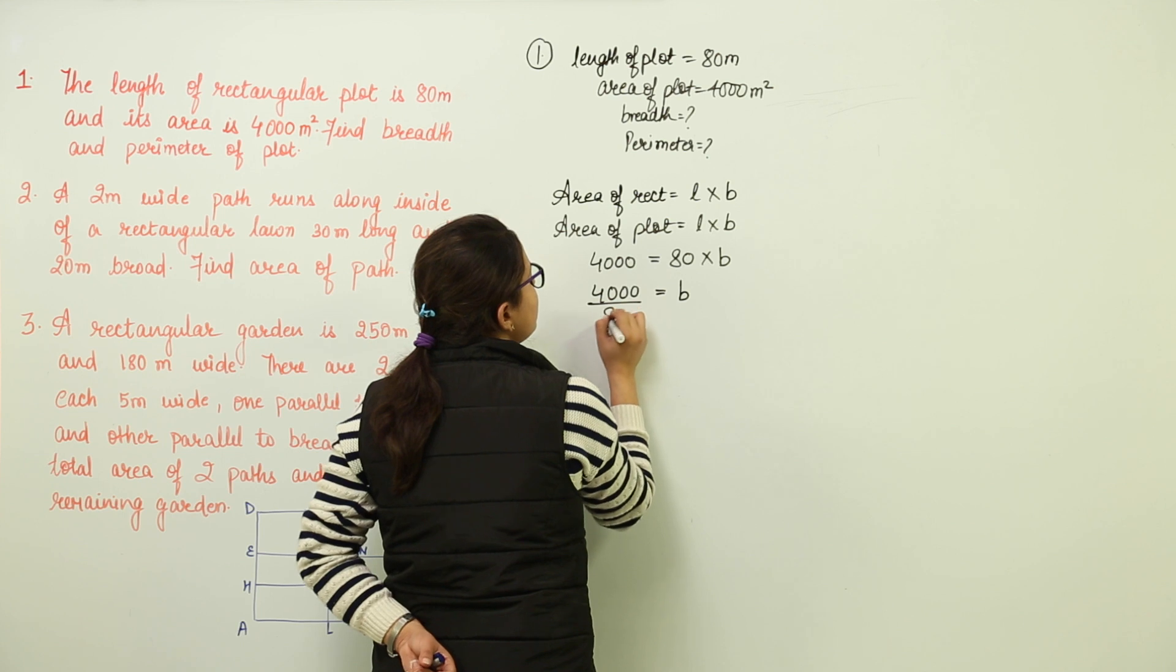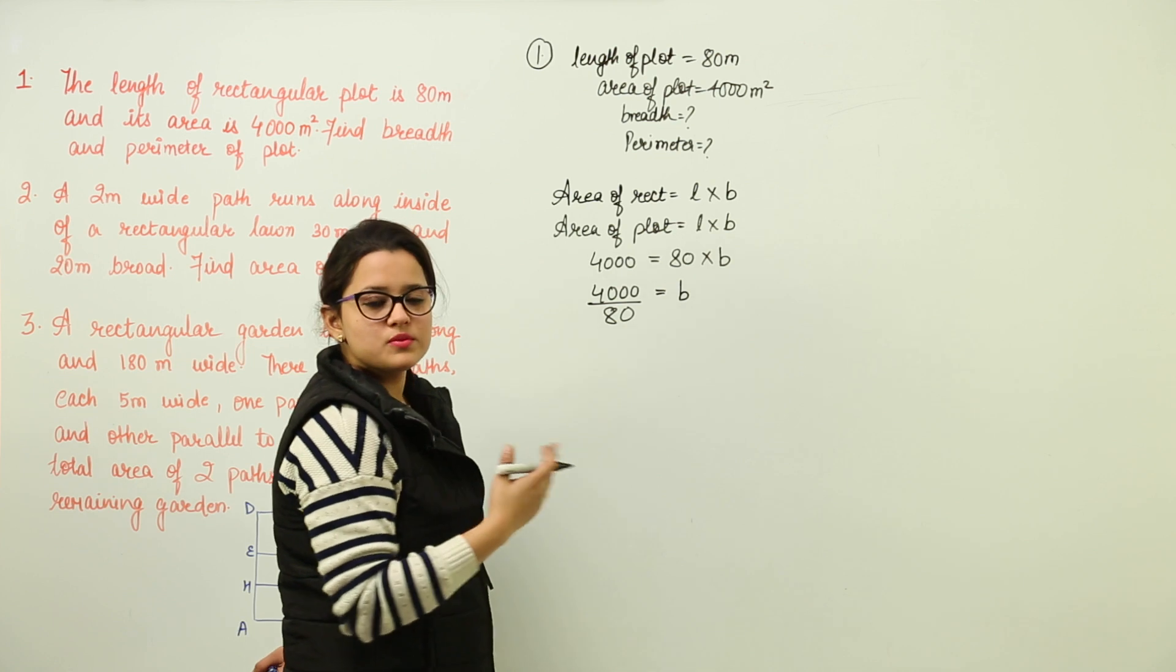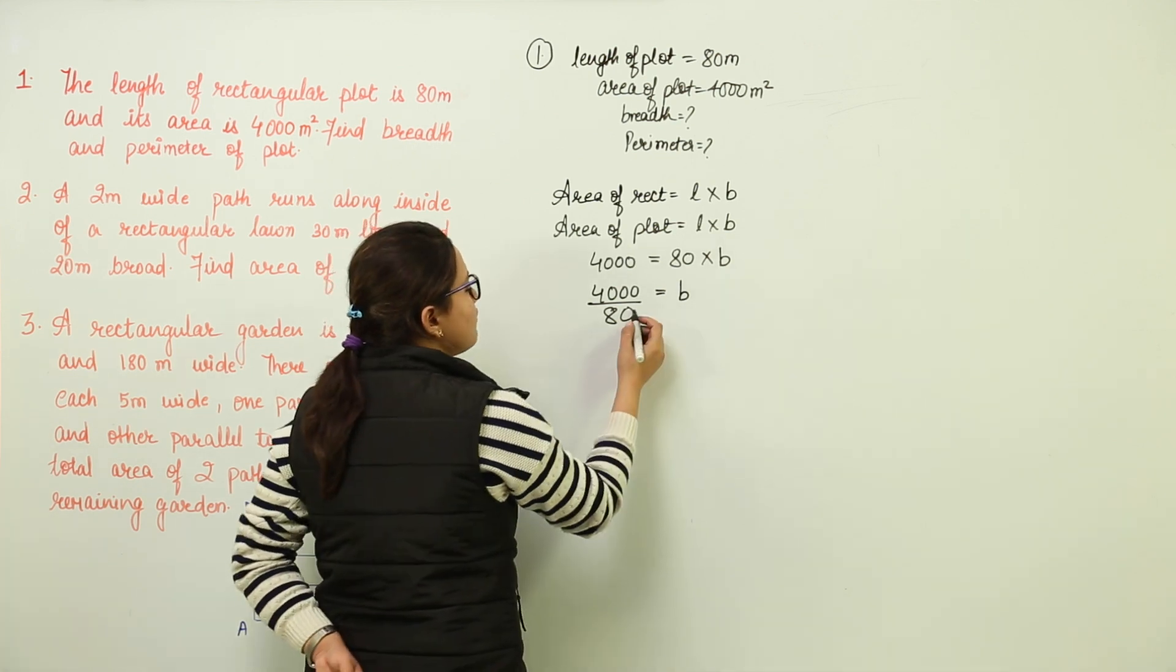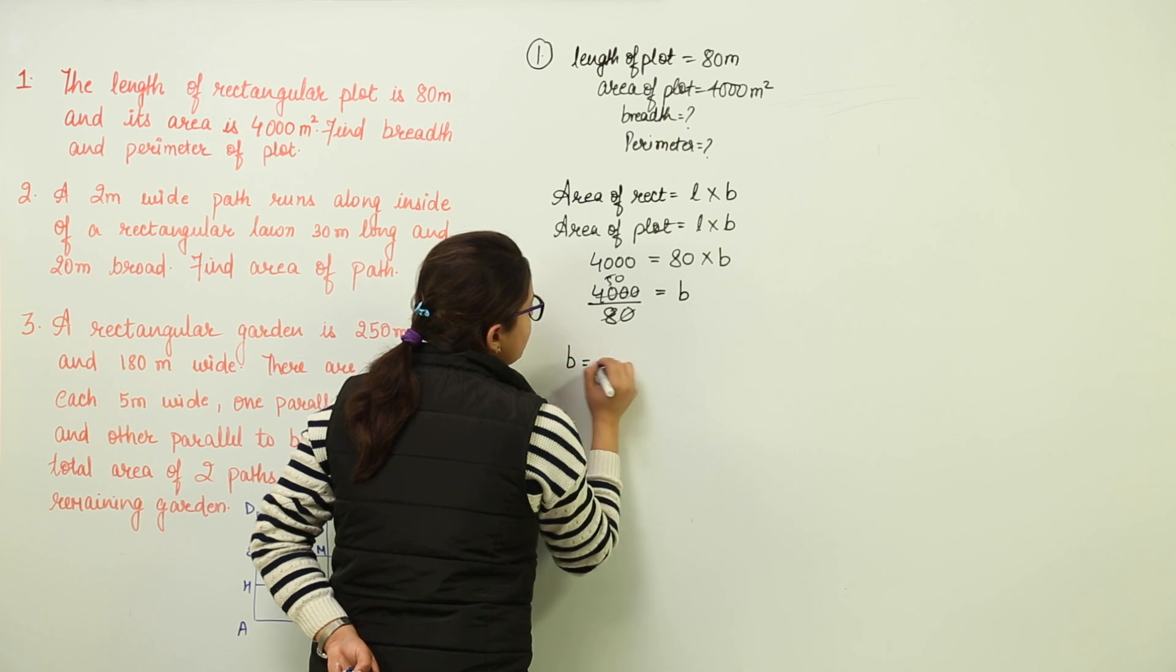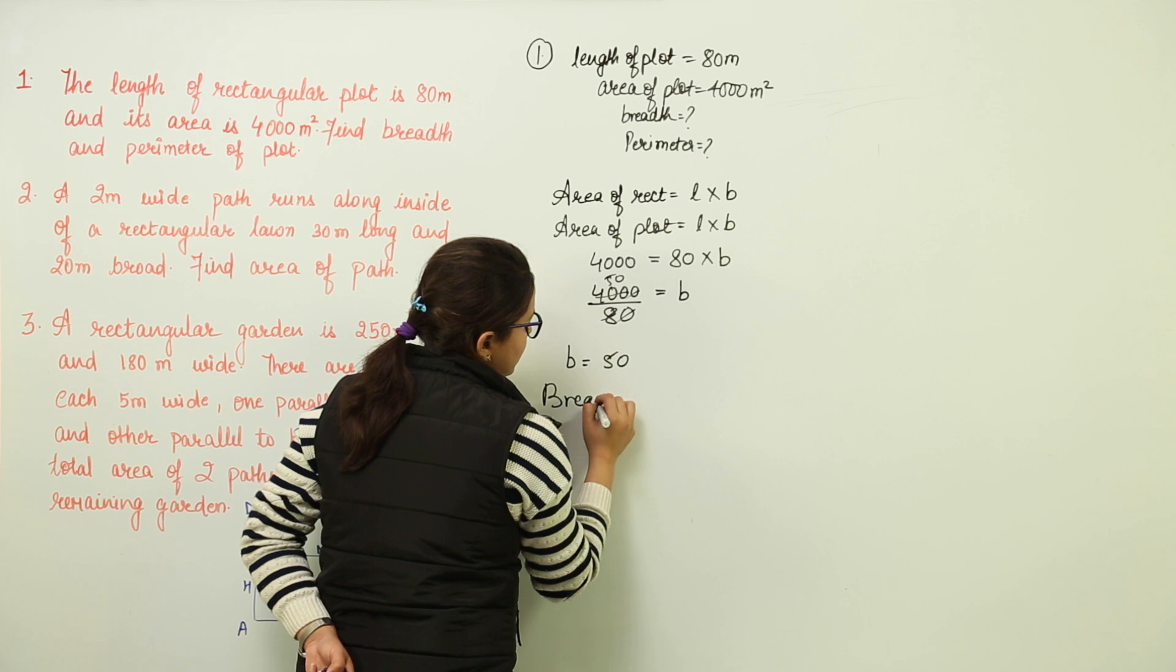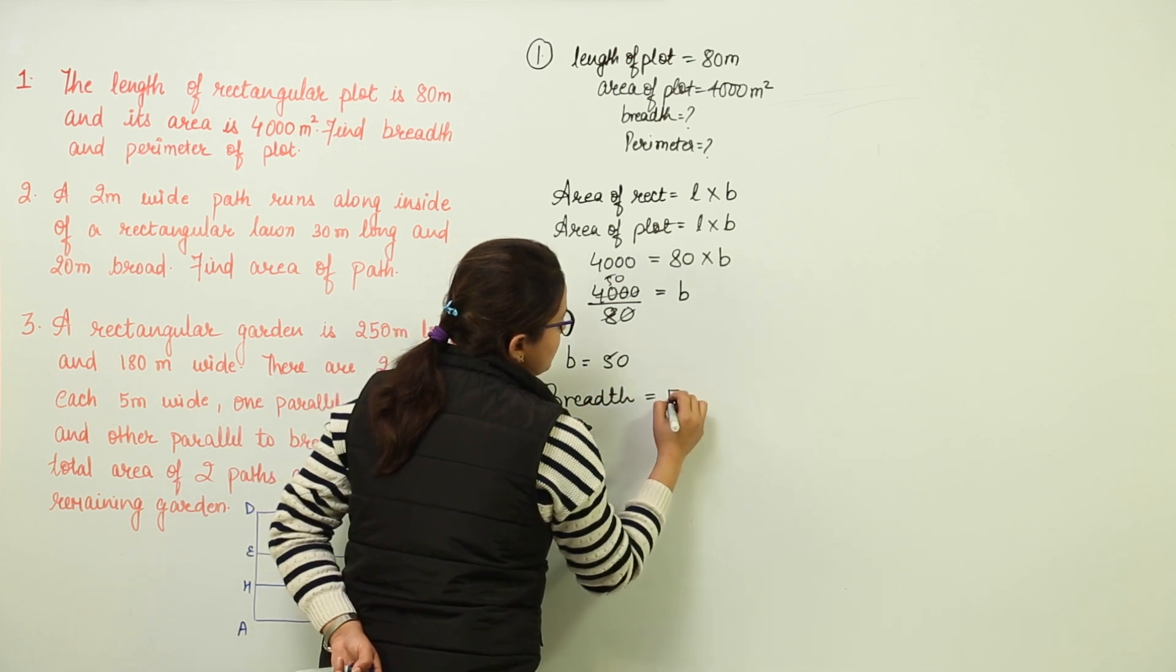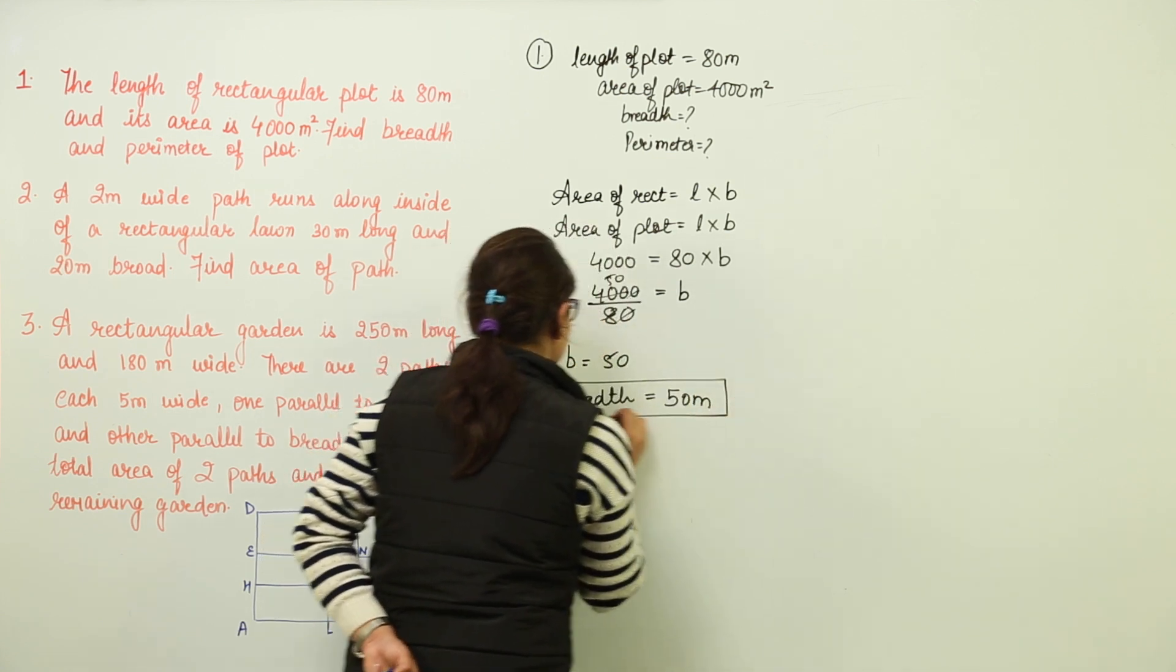So because we have already known how to solve this, we can solve it directly. The 80 goes to the denominator because it was getting multiplied. When you transpose it to the other side, it is going to get divided. And when you solve it further, you are going to get value of B as 50, or you can write that breadth of the rectangle plot is going to be 50 meters.